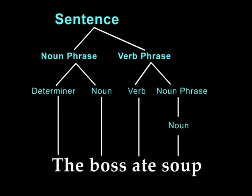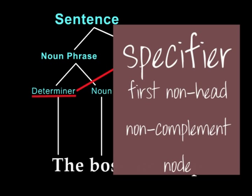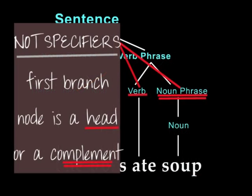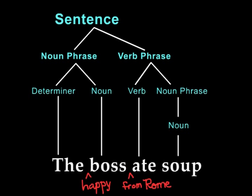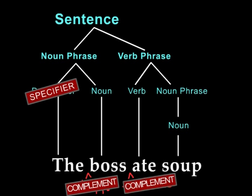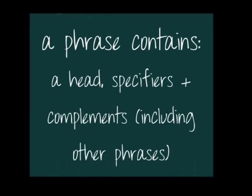The other elements in a phrase are either specifiers or complements. Specifiers are sisters of the subphrases within a phrase, meaning they branch off from the main phrase and sit parallel with any subphrase below the main noun phrase. Complements are sisters of the head, so they branch out next to the head word — like "happy" and "from Rome" if we added "happy boss from Rome." The specifier still stays up on the first branch of the noun phrase. Specifiers and complements are relative and found throughout the tree just like heads. Together, the head, specifiers, and complements make up all the material in a phrase.